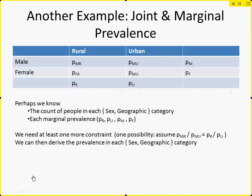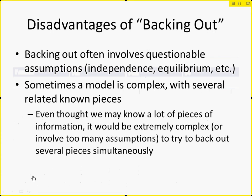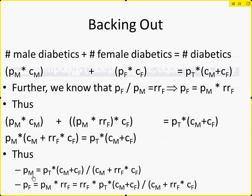The disadvantages of this are that it often involves questionable assumptions. A very common one is equilibrium — we might assume a stock is in equilibrium, so its value equals the value of the inflow times some average dwell time. These are strong assumptions. In other cases, the model is too complex to do this — there may be no closed-form relationship between what we do know (C sub M, C sub F, and the prevalence rate ratio RR sub F) and what we have to know. In those cases, we'll do calibration.